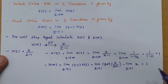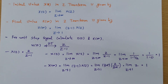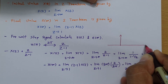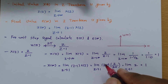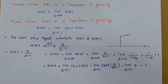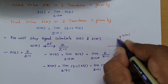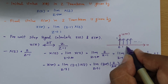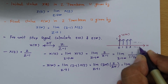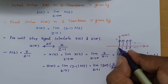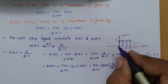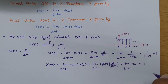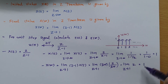So the initial value and final value of the unit step signal are both 1. We can verify this with a graphical understanding: if you plot U(n), the signal starts from n = 0 with value 1 and continues at 1 up to infinity. So the initial value at n = 0 is 1, and the final value at infinity is also 1.